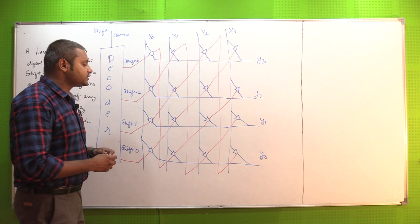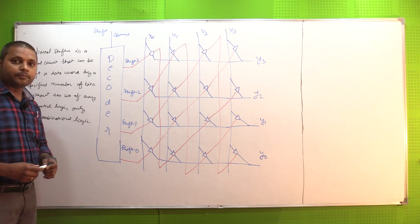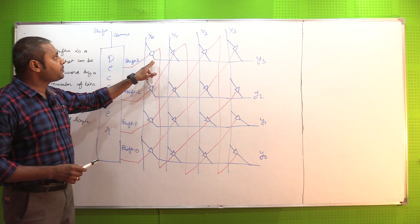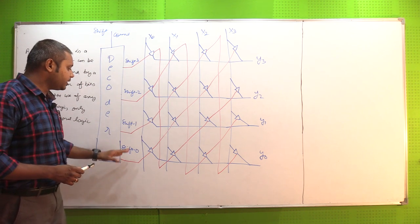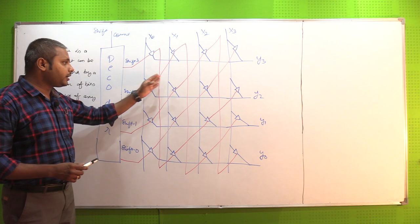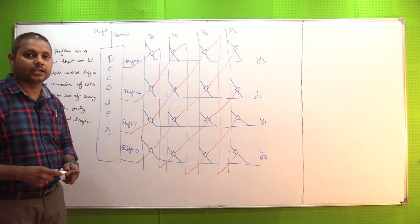Barrel shifter we generally construct using a decoder. So here a diagram has been made, you can see, we have a decoder and shift 3, 2, 1 and 0, which is what happens, particular bits will help me to shift with the help of the bits.